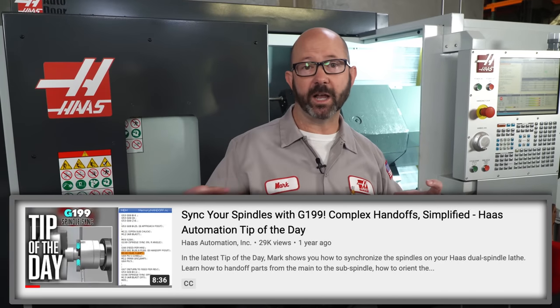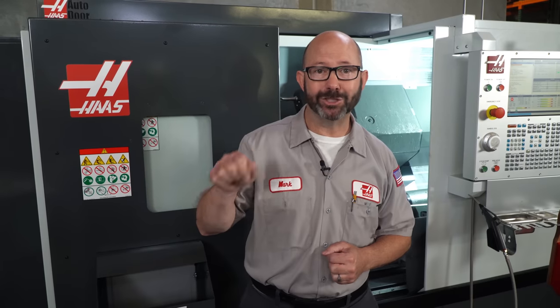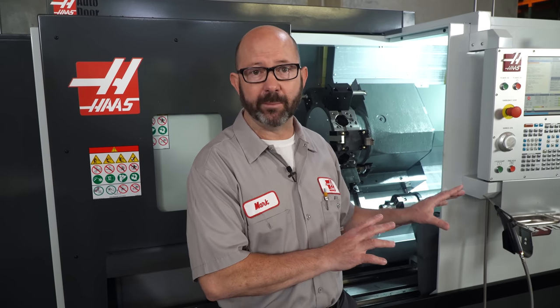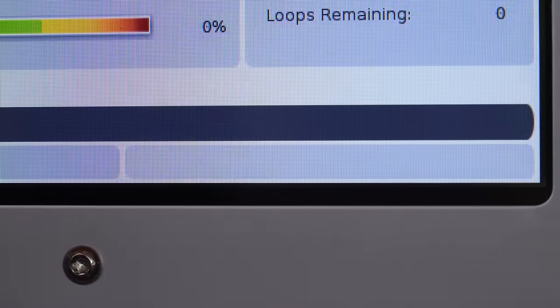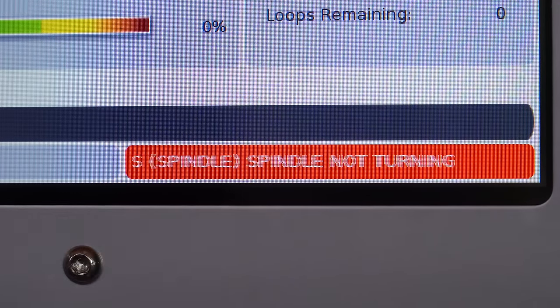Now, we do have sub-spindle-specific M and G codes. M143 is gonna start that sub-spindle going clockwise, and that's useful for G199 part handoffs, and for just starting up the spindle manually so we can skim it just by hand jogging, but we're never gonna use those type of codes when actually machining a part from within our program. Not necessary. In fact, if we tried to machine with an M143, we would just get alarms.